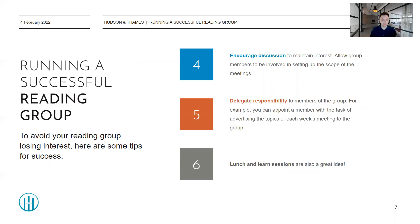In terms of maintaining interest within your group, encourage discussion. It should be a very relaxed format. Get people involved when someone is presenting some aspect of a paper they've been reading. If there's something you or someone else doesn't understand, there should be room to discuss it and ask questions. Allow people also to get involved in setting things up — delegate responsibility. For example, you can have a particular member tasked with advertising each week's topic, in an email format where the speaker's name is mentioned, a description of their topic is given, as well as the links to the paper or papers being presented. This is a great way of getting people involved and keeping interest within the group.